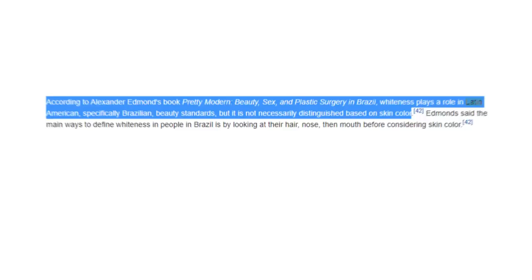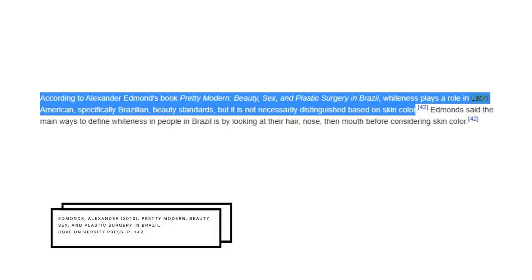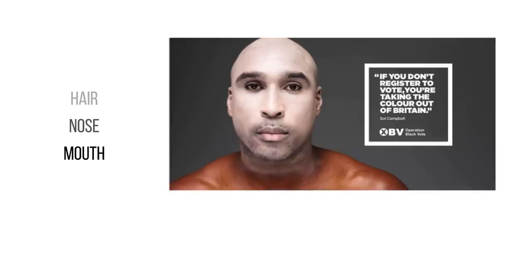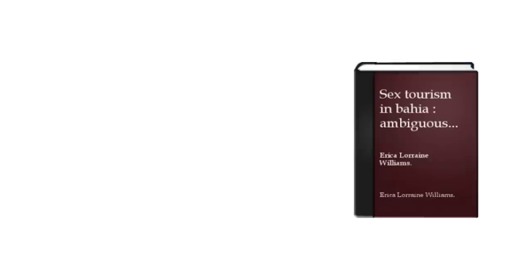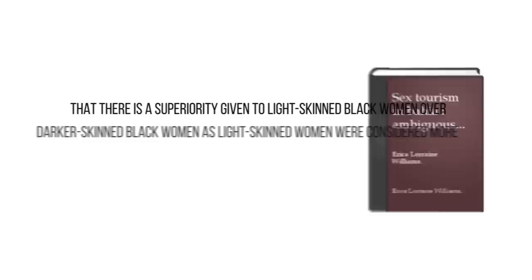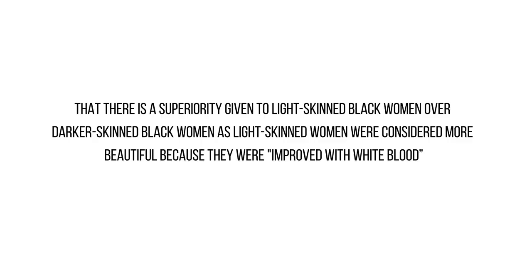According to Alexander Edmond's book 'Pretty Modern: Beauty, Sex and Plastic Surgery in Brazil,' whiteness plays a role in Latin American — specifically Brazilian — beauty standards, but it is not necessarily distinguished based on skin colour. Edmond said the main ways to define whiteness in Brazil is by looking at hair, nose, and mouth before considering skin colour. In Erica Lorraine Williams' 'Sex Tourism in Bahia: Ambiguous Entanglements,' Williams addresses how European and white beauty standards carry more privilege than darker skinned and black women in Brazil, citing that light skinned women were considered more beautiful because they were 'improved with white blood.' So in places such as Brazil there is more focus on Caucasian features than simply skin colour, compared to places such as the Indian subcontinent where plastic surgery is less common and skin whitening creams are preferred.